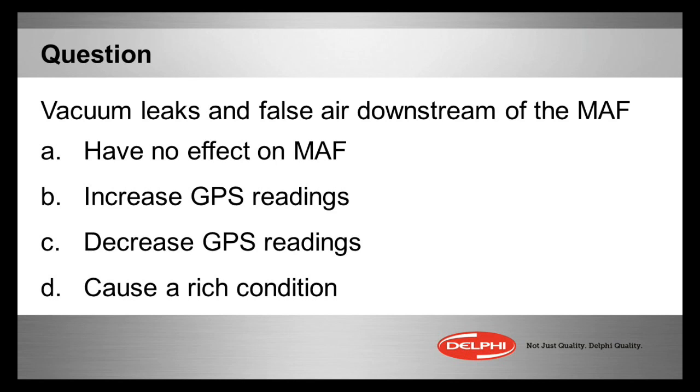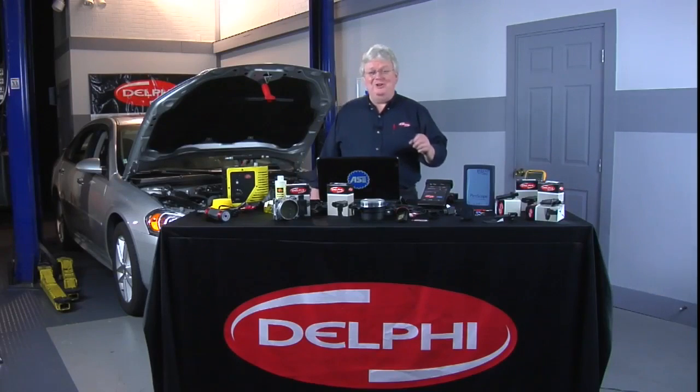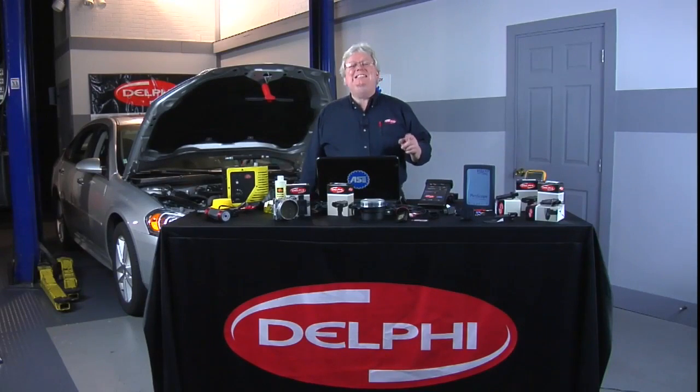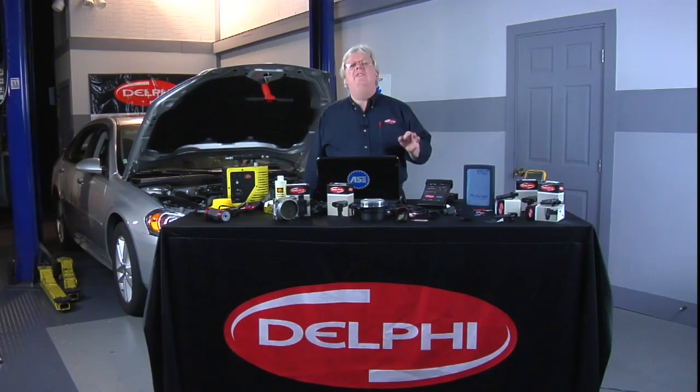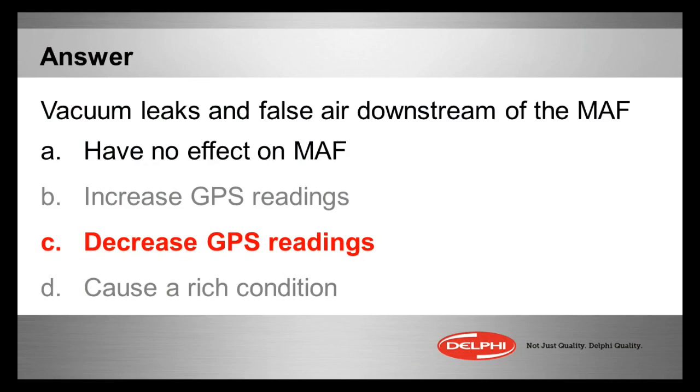Make your selection now. The answer is C, Charlie — decrease of grams per second GPS readings.